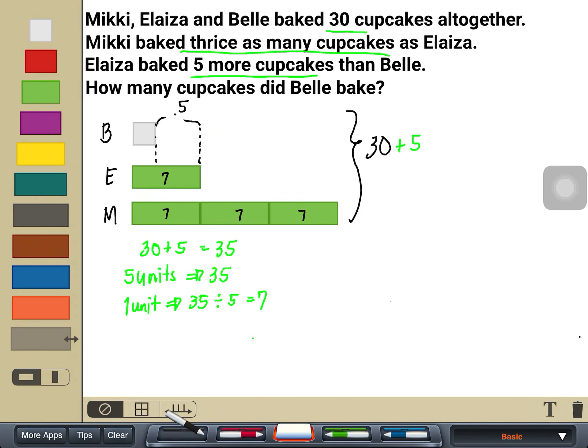Now, looking for Belle, that would simply be 7 minus 5, which is 2. So our final answer would be Belle baked 2 cupcakes.